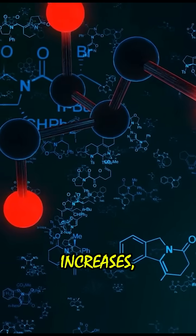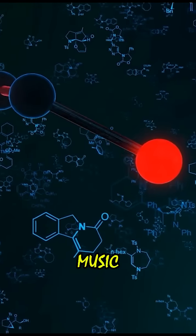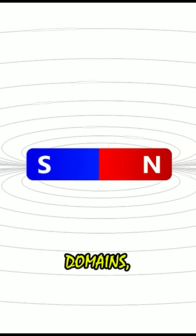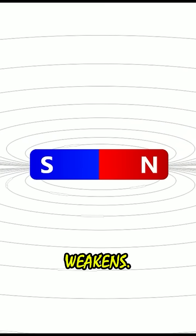But as the heat increases, it's like someone cranked up the music and everyone starts moving chaotically. The vibrations disrupt the alignment of those domains, and as a result, the magnetic field weakens.